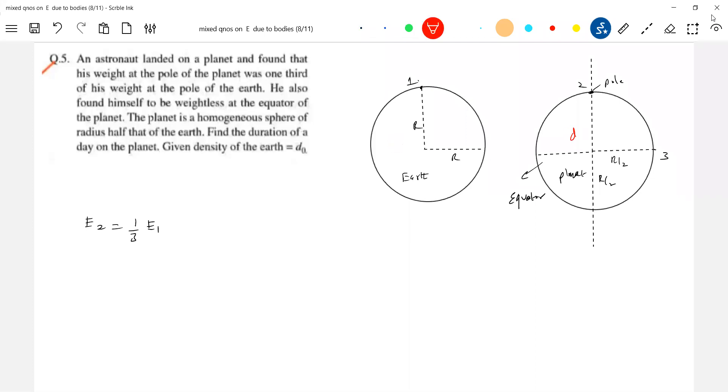It's a nice problem, just need to understand things properly. Find the duration of a day on the planet - what do you mean by that? Time period, nothing but omega is asking. We don't know this omega. If you know omega you can find the time period - the formula is 2π by omega. That omega has to be calculated with all this information.